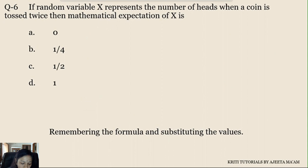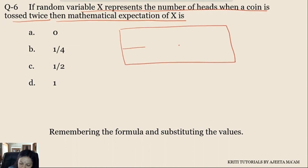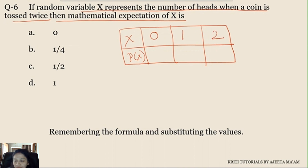The sixth question is from the probability chapter, based on binomial distribution — or random distribution, you can use either. When a coin is tossed twice, we have to find the mathematical expectation of the number of heads. If you know binomial distribution it can be done easily, but if not, you can also solve it using a random distribution table. For the table, we list x, px values with x = 0, 1, or 2 heads.